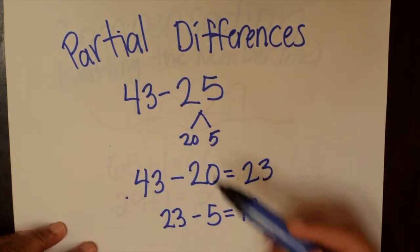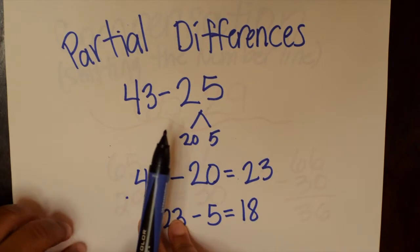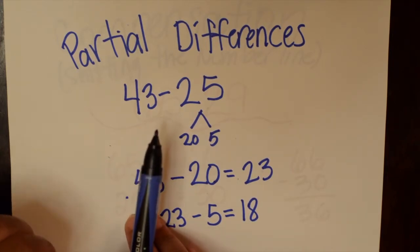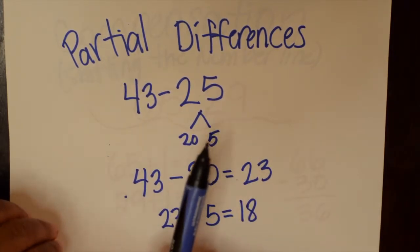Another strategy is partial differences. And that's really where the kids are just breaking the number apart and taking it up, doing the subtraction part by part. So they start at 43 minus 25, they take away 20, and they get to 23, and then they take away five. Partial differences is actually a strategy that lots of kids can wrap their heads around and do quite well. It's always good to have some sort of visual to show exactly how they're taking those numbers apart.